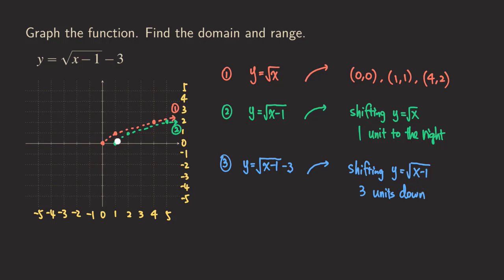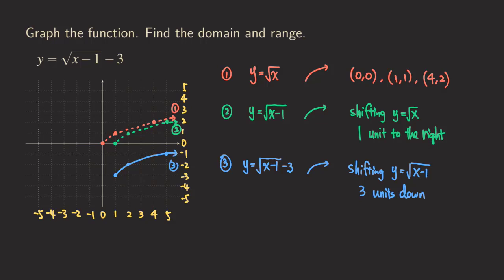So now what happens is we look at those three key points and move them three units down. You can count, or just look at the y values: we start with zero, and three units down gives us a y value of negative three for that point. The next point had a y value of one, so we get negative two. And the same thing for the last point. So we are going to get this point here, and then the shape doesn't change — so we graph this one. That's our third one.